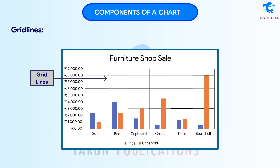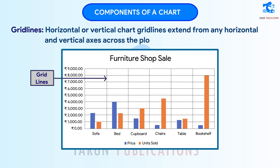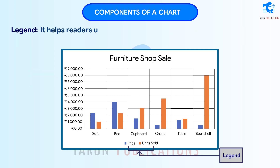Gridlines: Horizontal or vertical chart gridlines extend from any horizontal and vertical axis across the plot area of the chart.